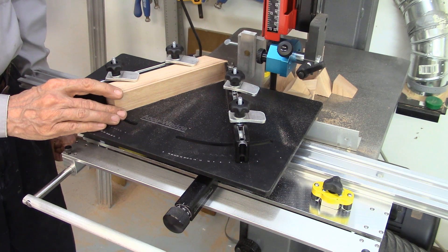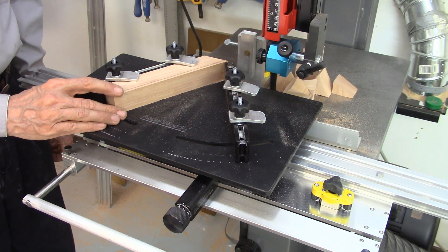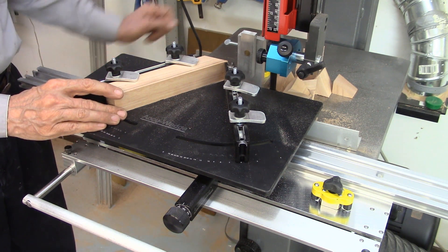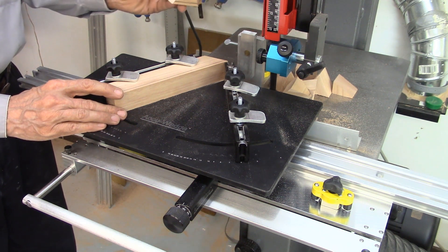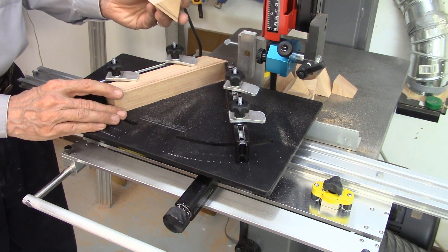To cut the wedges, I'm presently using a 10 teeth per inch blade. I've also used a 14 teeth per inch blade. The 10 teeth per inch blade gives me a pretty decent cut. A 14 will give me a much finer cut.